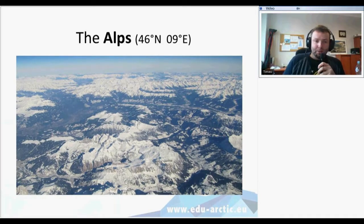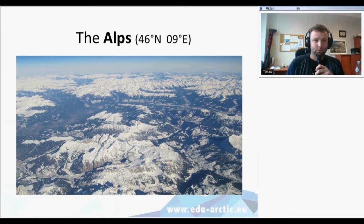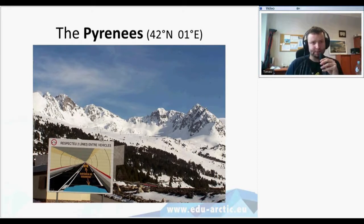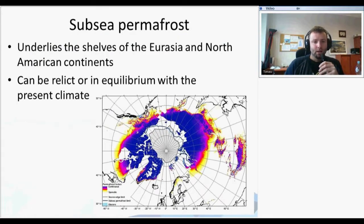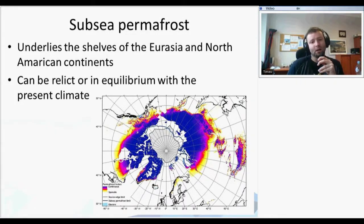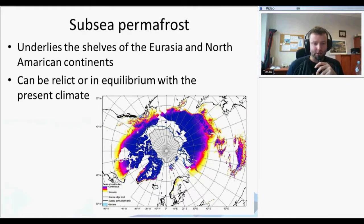There is also permafrost in the Alps at 46 degrees north, and there are patches of permafrost in the Pyrenees in Spain at 42 degrees north. Subsea permafrost, shown as the blue line on the bottom of the Arctic Ocean, underlies the shelves of the Eurasian and North American continents, and it is either relict or in equilibrium with the present climate.